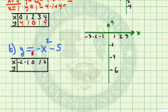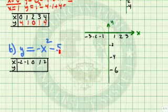Let's now try the equation y=-x²-5. Again, if I select arbitrary values for x: -2, -1, 0, 1, and 2.